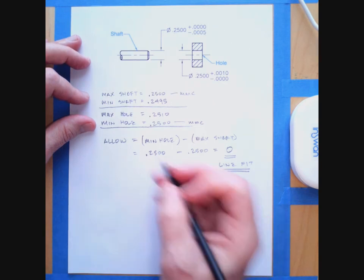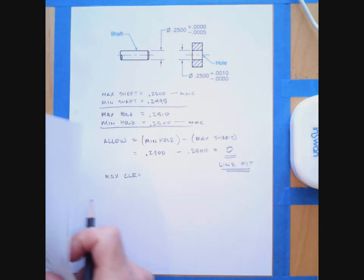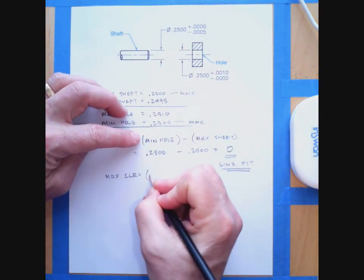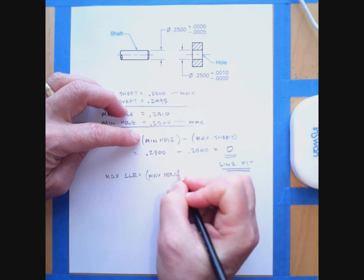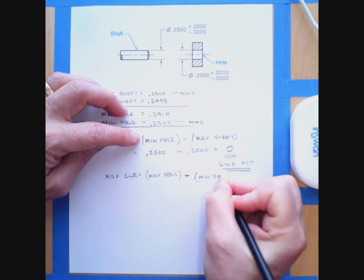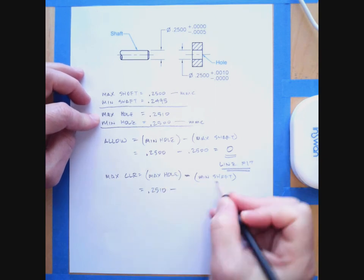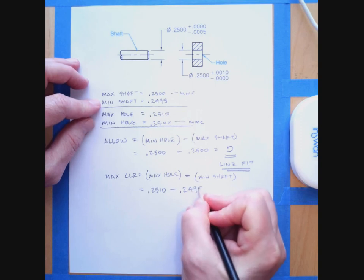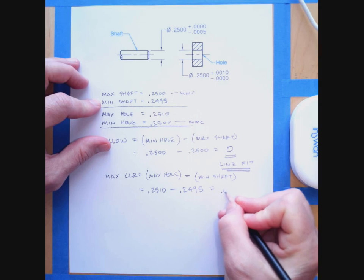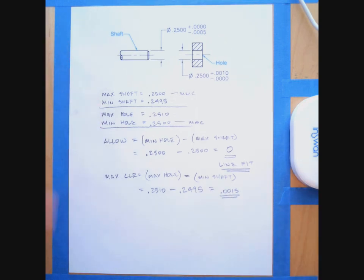We can also look at maximum clearance. Maximum clearance occurs when we have the maximum hole minus the minimum shaft: 0.2510 minus 0.2495 equals a maximum clearance of 0.0015. That's it — I hope that helped. If not, please send me an email and I'll help you figure out what the problem is.